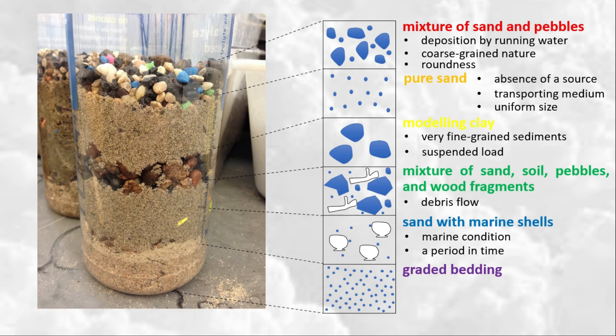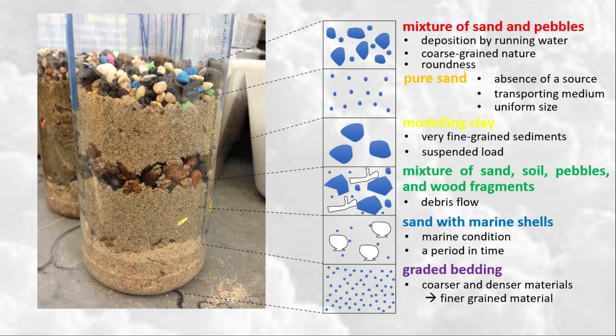Lastly, we have graded bedding. When sediments are deposited from suspension, coarser and denser materials settle first, followed by progressively finer-grained material. The resulting sedimentary structure is called graded bedding. In extreme conditions, the suspended load of a flooded river may consist of pebbles, sand, silt, and clay. As flooding recedes, suspended load will be progressively deposited according to grain size, thus forming graded bedding.